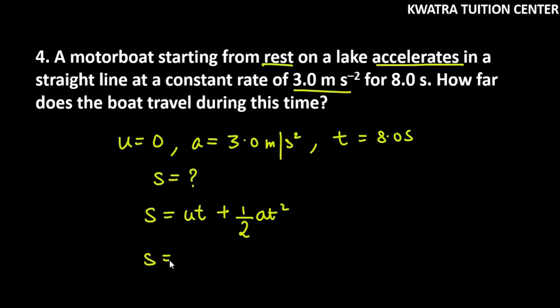So s, take the first term. Why is it 0? Because u is 0. Half into a, 3, into 8 squared. So this will be half into 3 into 64.